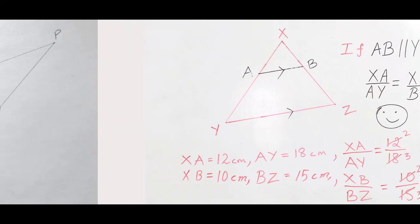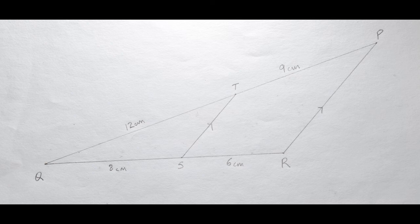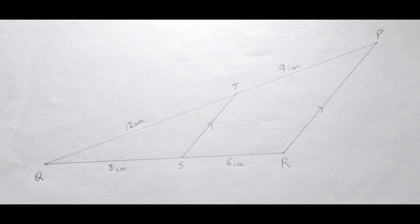Just like in this other example, I've drawn a triangle PQR here, and I've drawn one line ST, which is parallel to one side of the triangle. ST here is parallel to PR. And the measurements here, QS is equal to 8 cm, SR equal to 6 cm,